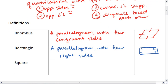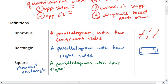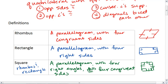A square is both a rhombus and a rectangle. A square is a parallelogram with four right angles and four congruent sides. Those are your basic definitions.